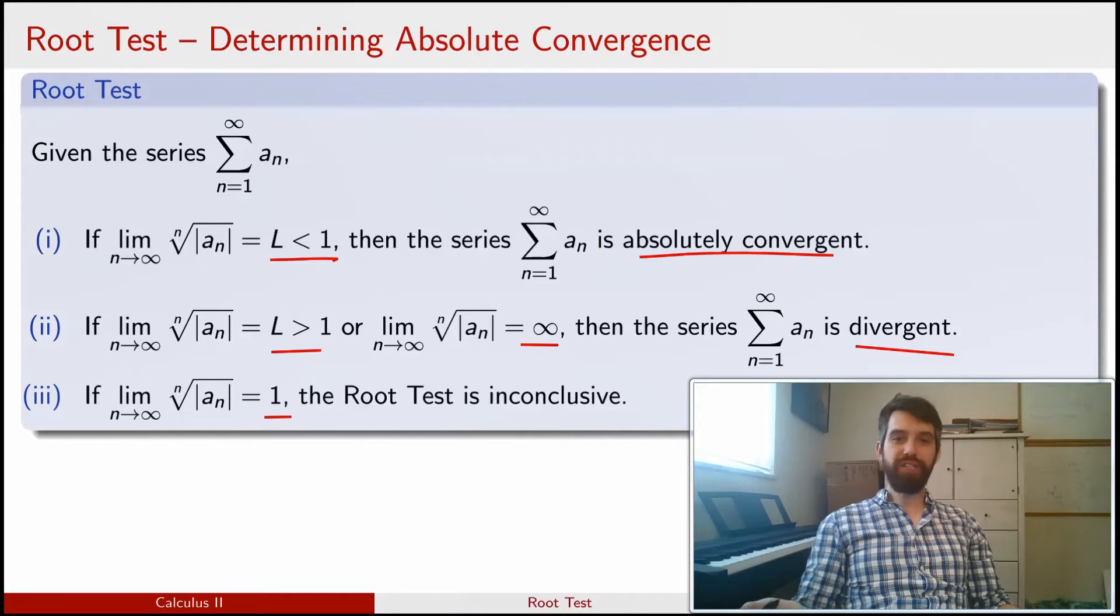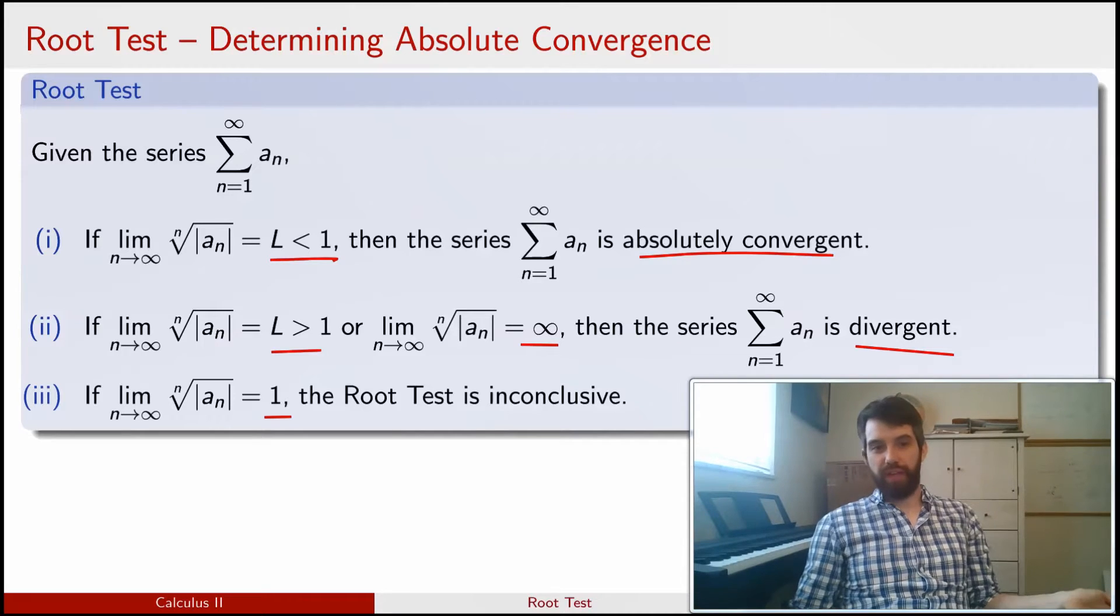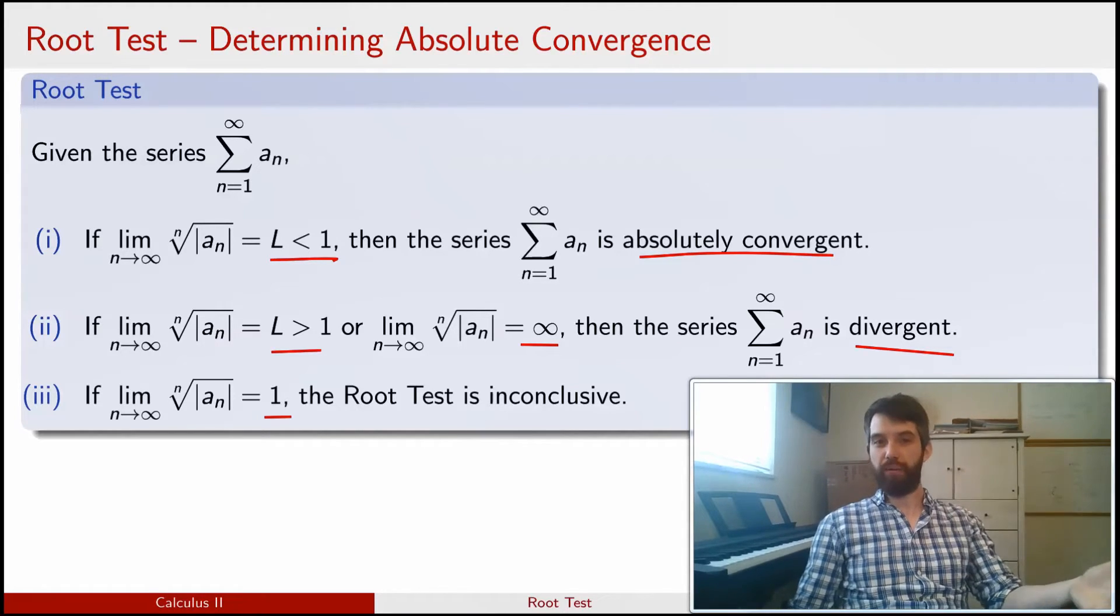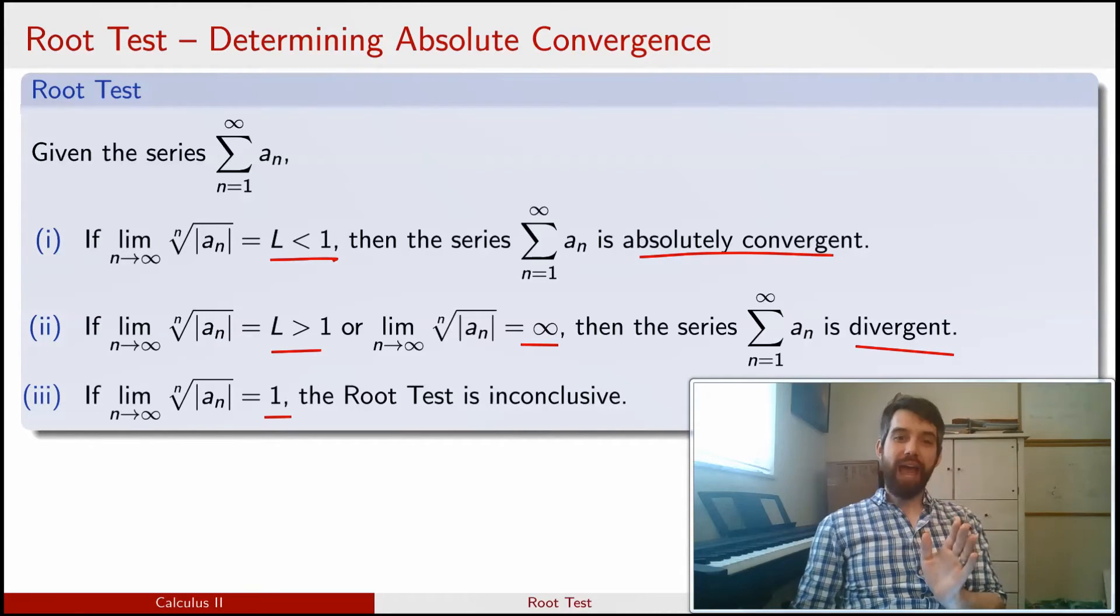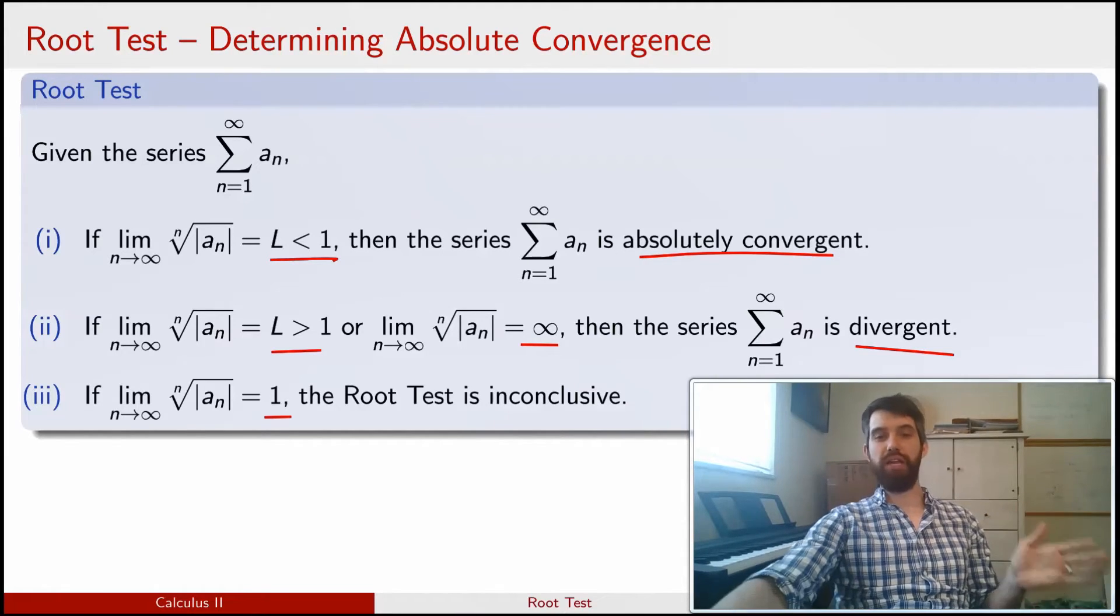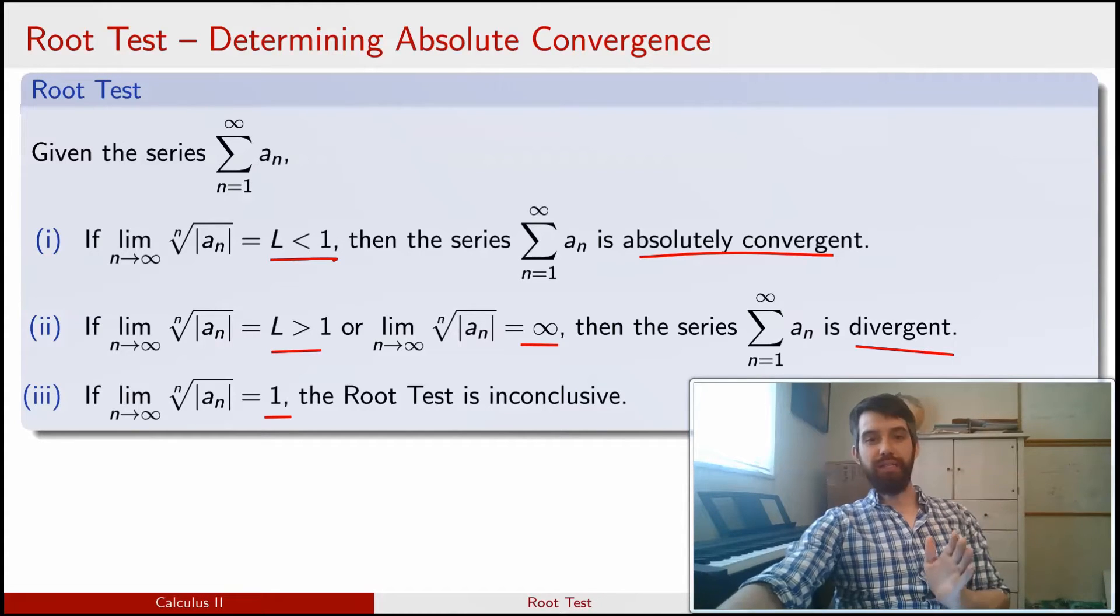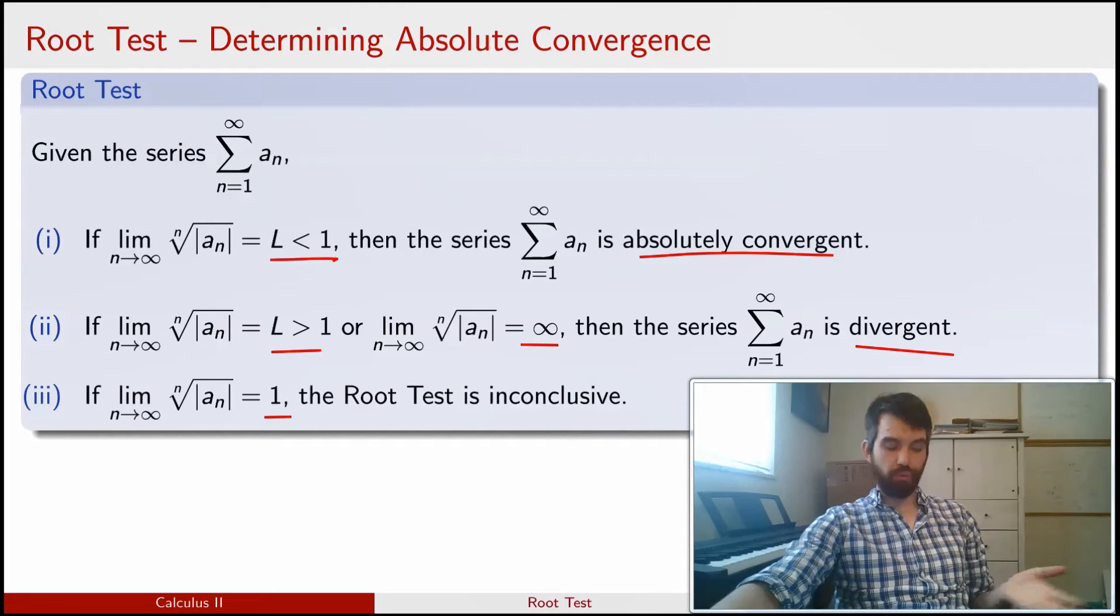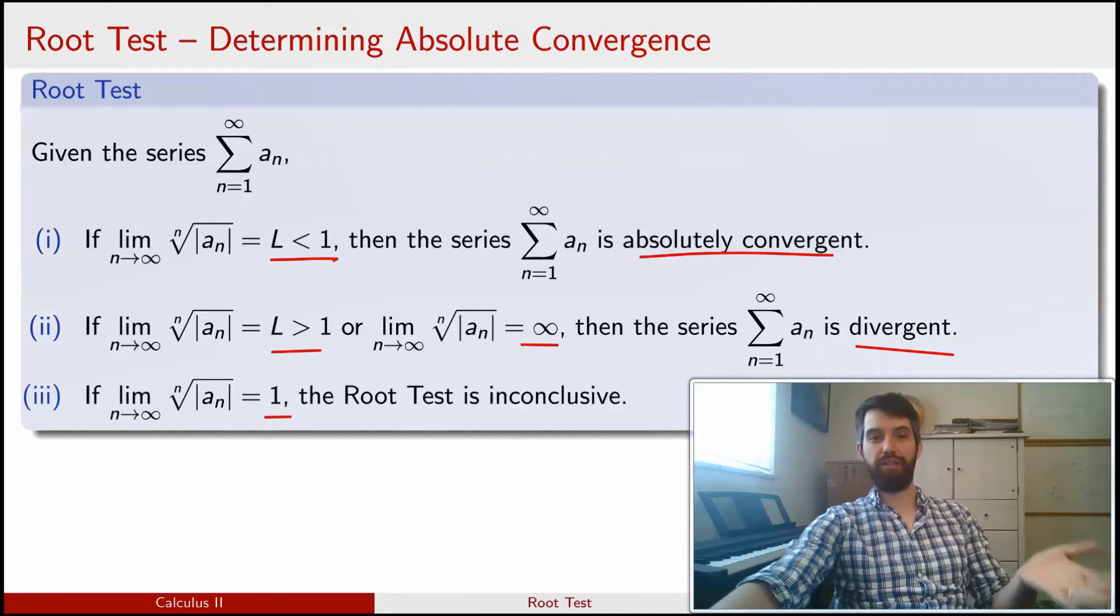So what kind of series is this going to apply to? We're taking nth roots of things. Usually taking an nth root of something, because n's changing in your limit, is a bit of a weird thing to do, unless the a_n has exponents of the power of n already built into it. So that is the category of series where this is useful. Series that have blah to the power of n, and then this root test lets you get rid of the to the power of n.